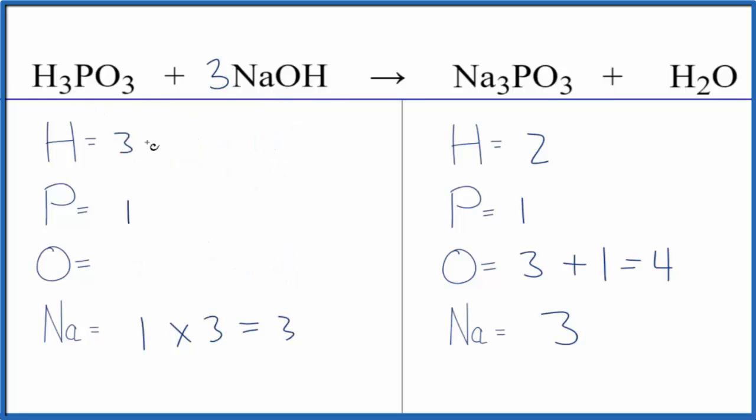So now we have three plus three times the one, six hydrogens, and then for oxygen, we have the three here, plus this one times three here, six oxygen atoms.